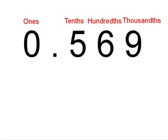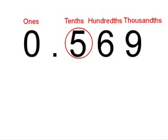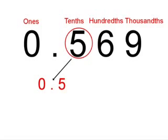Our first number is 0.569. The 5 is in the tenths column. The 5 is actually 0.5. The decimal point means the 5 is smaller than 1.